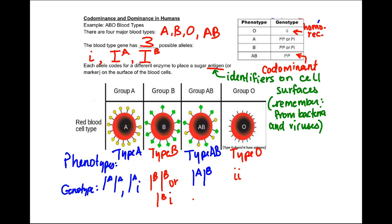So, we can just say type AB, or the genotype being I^A, I^B. And then lastly, we have type O, which is a recessive trait. And so, we would have two lowercase i's.